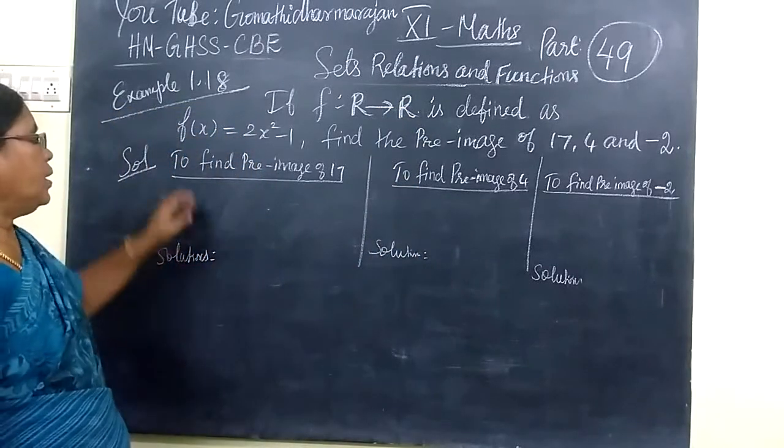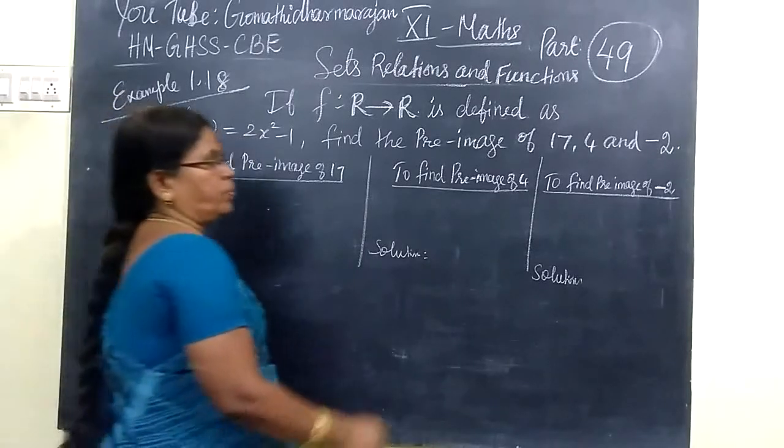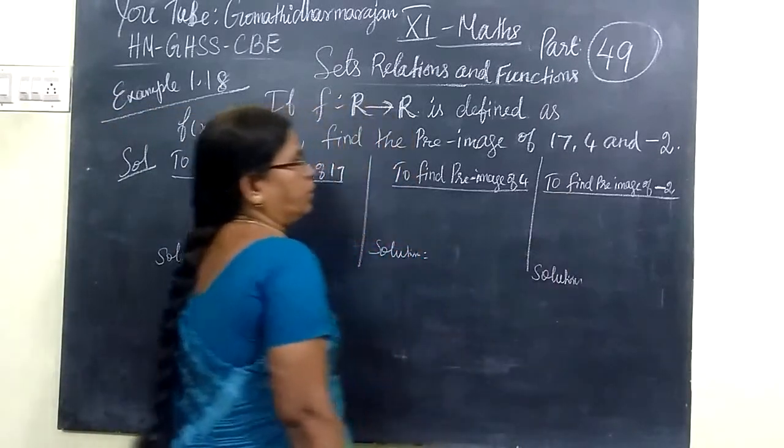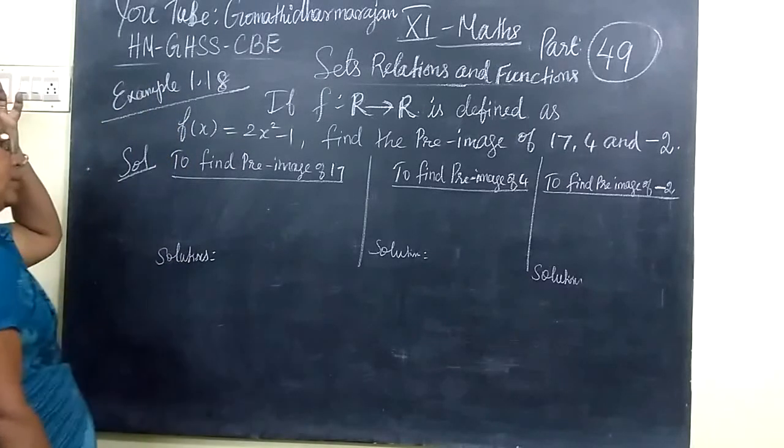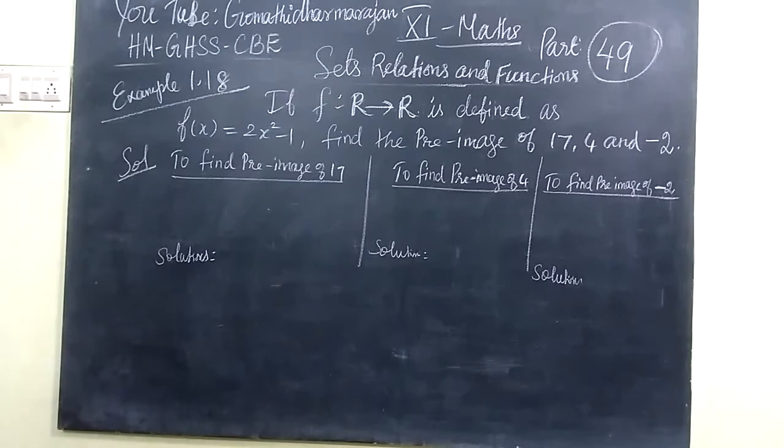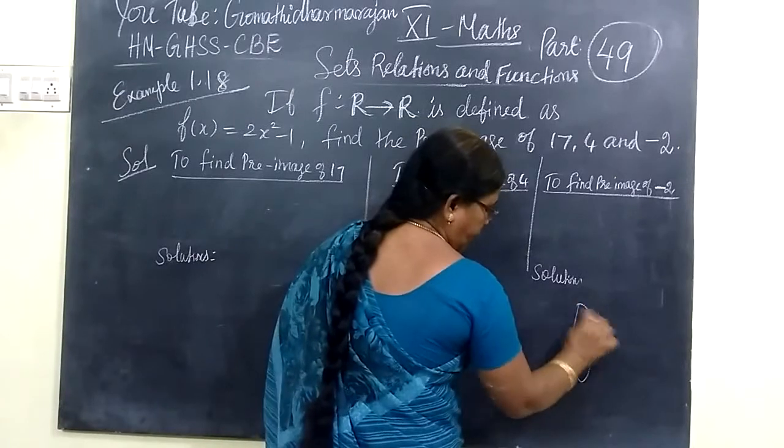F is defined as F(x) = 2x² - 1. Find the real preimage of 17, 4, and -2. Here F is given as an onto function. So we want to find the real preimage of these numbers.